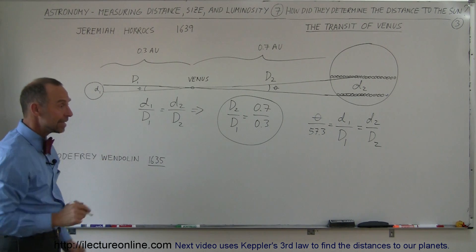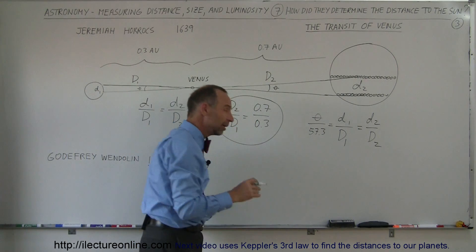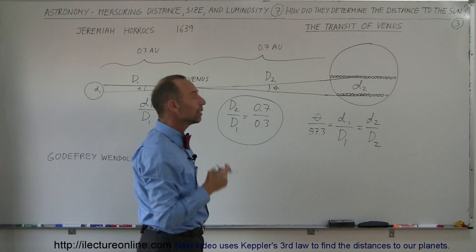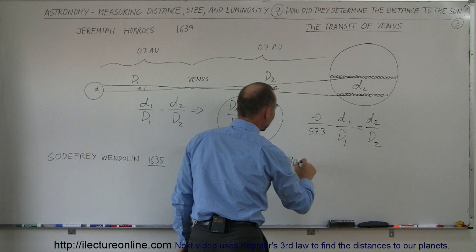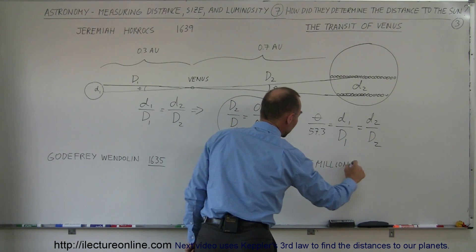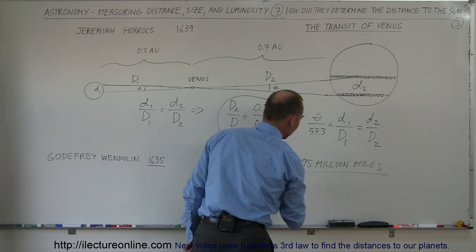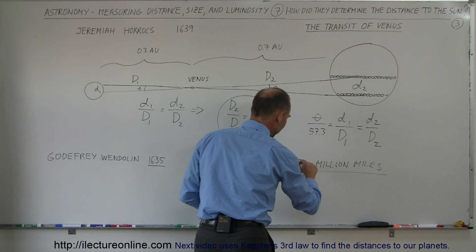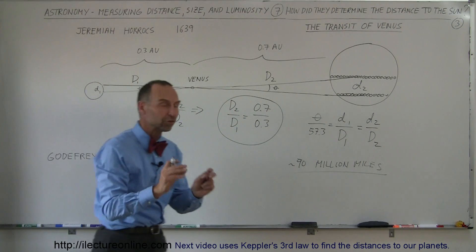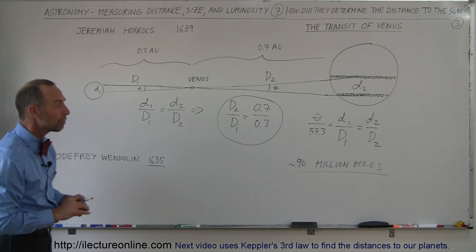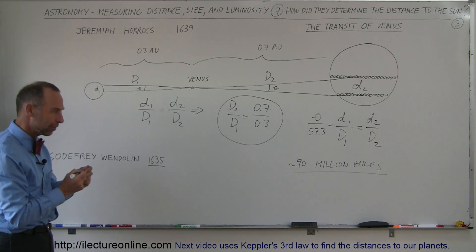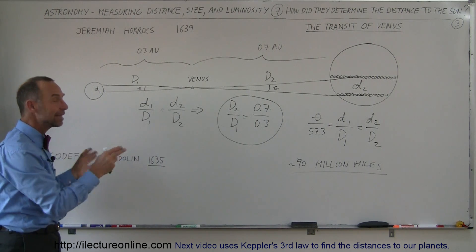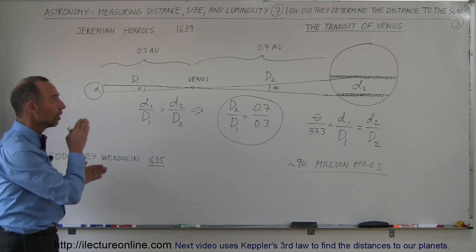And it turned out by using this technique, they finally realized that the distance to the Sun was roughly between 90 to 95 million miles, which was very close to the actual distance. Actually I think they were just a little bit short, closer to 90 million. So the rough estimate was about 90 million miles, which was just shy of the actual value of 93 million miles. So they were just within a few million miles. This method finally got them really close to the actual measurement to the distance of the Sun.